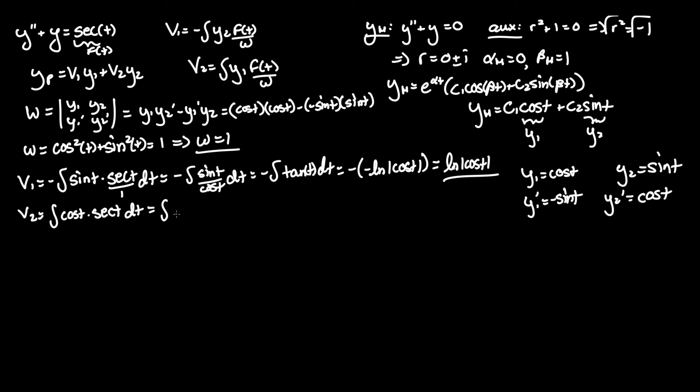So this equals the integral of 1 dt, or just integral of dt, which is t. So v1 equals ln absolute value of cos t and v2 equals t. Looking back at our y particular here, let me star that.